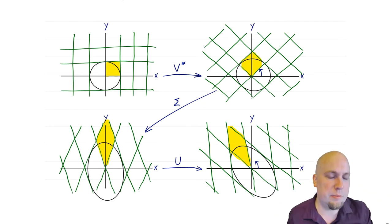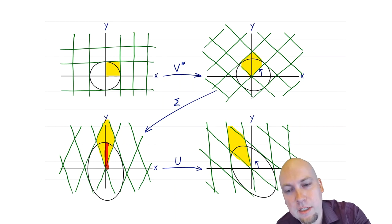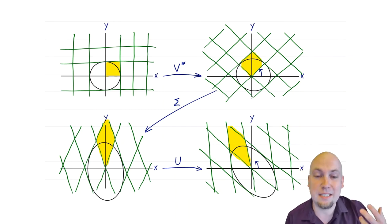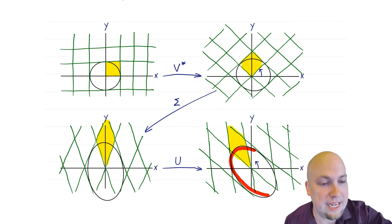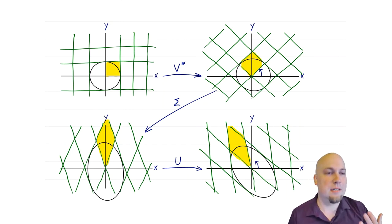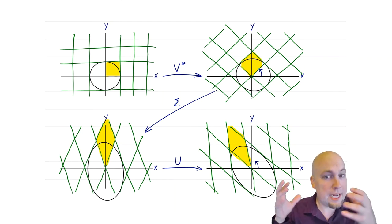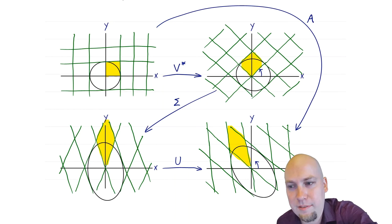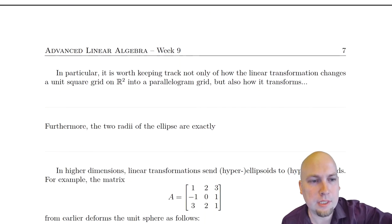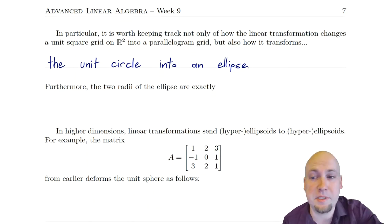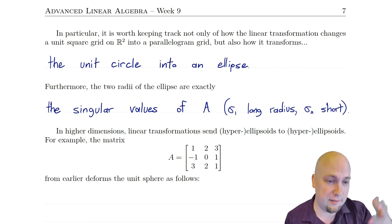If we had more dimensions there would be more singular values. The longest axis of the ellipse is sigma_1, the largest singular value, and the shorter axis is sigma_2, the smaller singular value. So it's important when considering the singular value decomposition to consider what happens to the unit circle, not just the unit square. The matrix transforms the unit circle into an ellipse, and the two radii of that ellipse are the singular values of A: sigma_1 is the long radius and sigma_2 is the short radius.